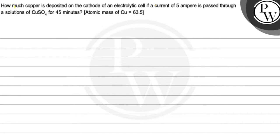Hello, let's see this question. How much copper is deposited on the cathode of an electrolyte cell if a current of 5 ampere is passed through a solution of copper sulfate for 45 minutes, atomic mass of copper is 63.5.